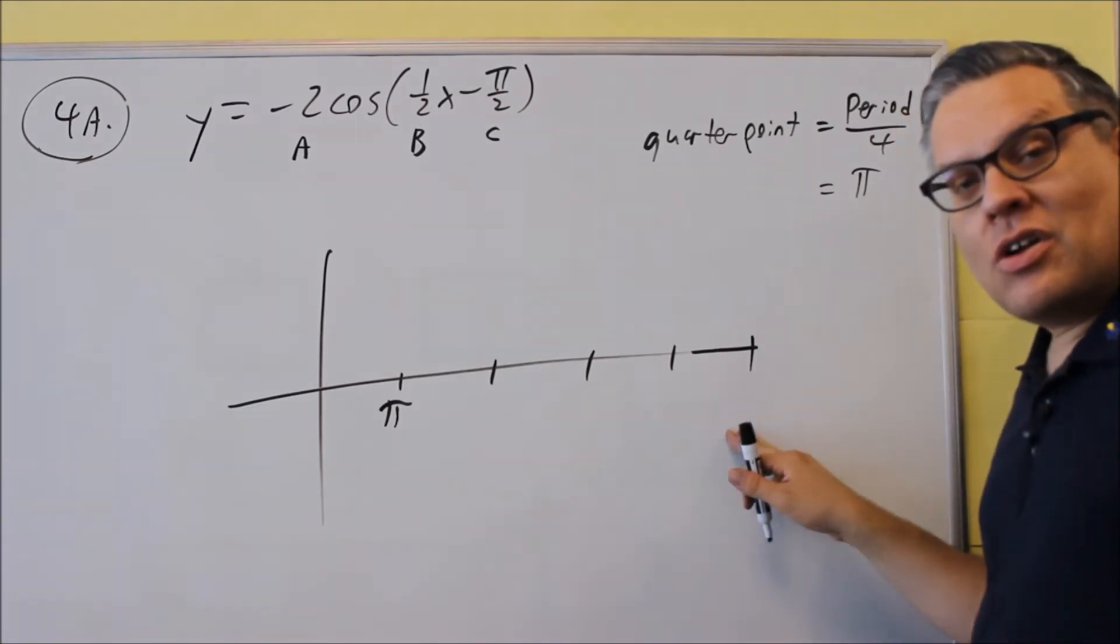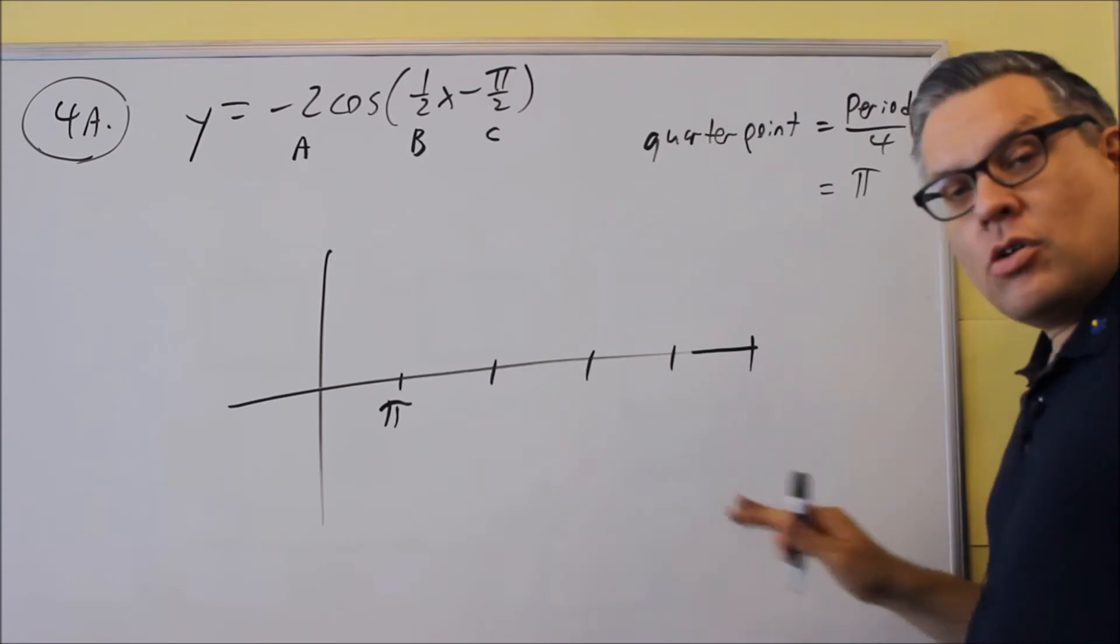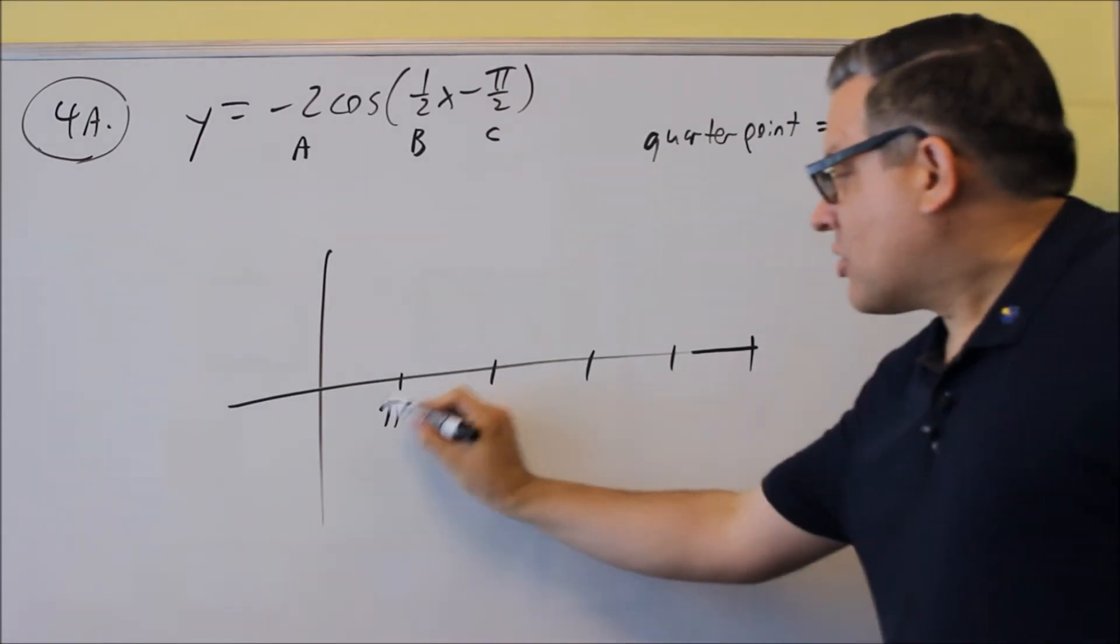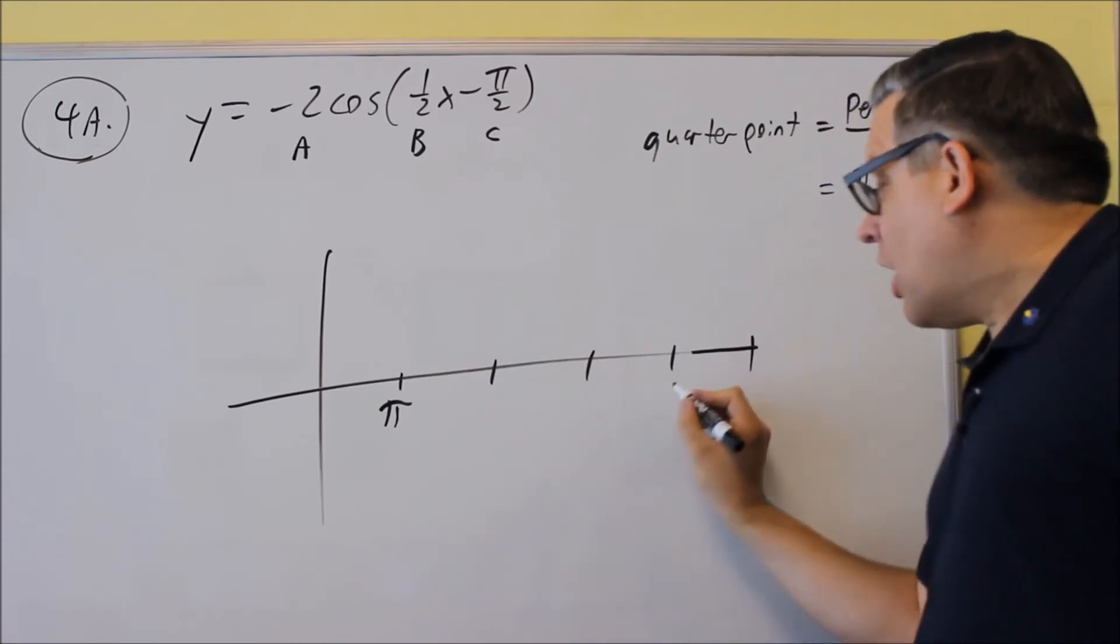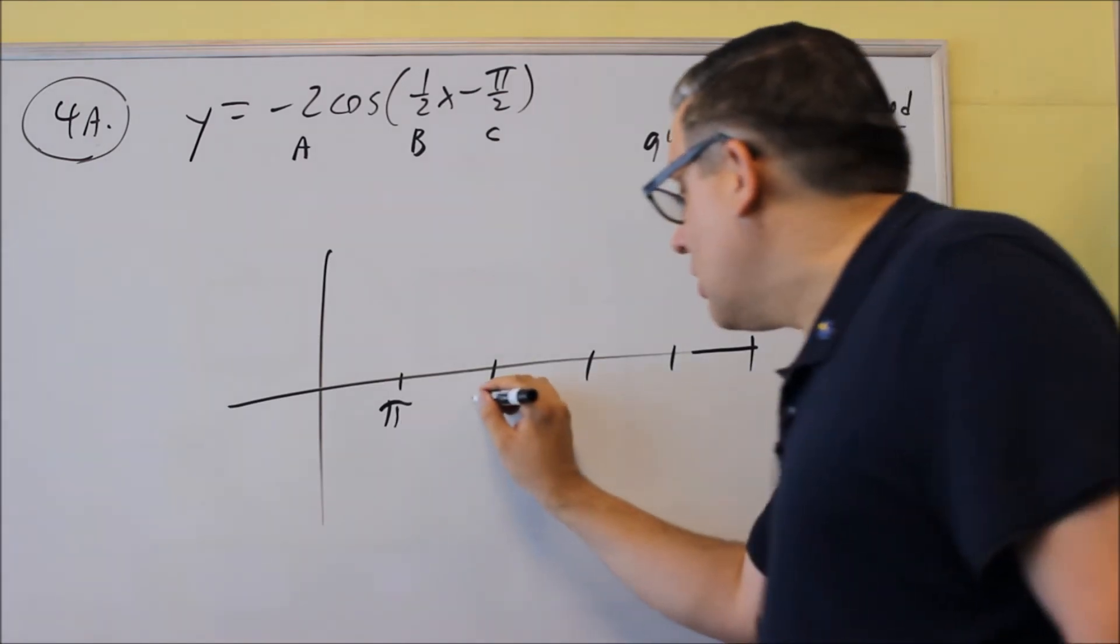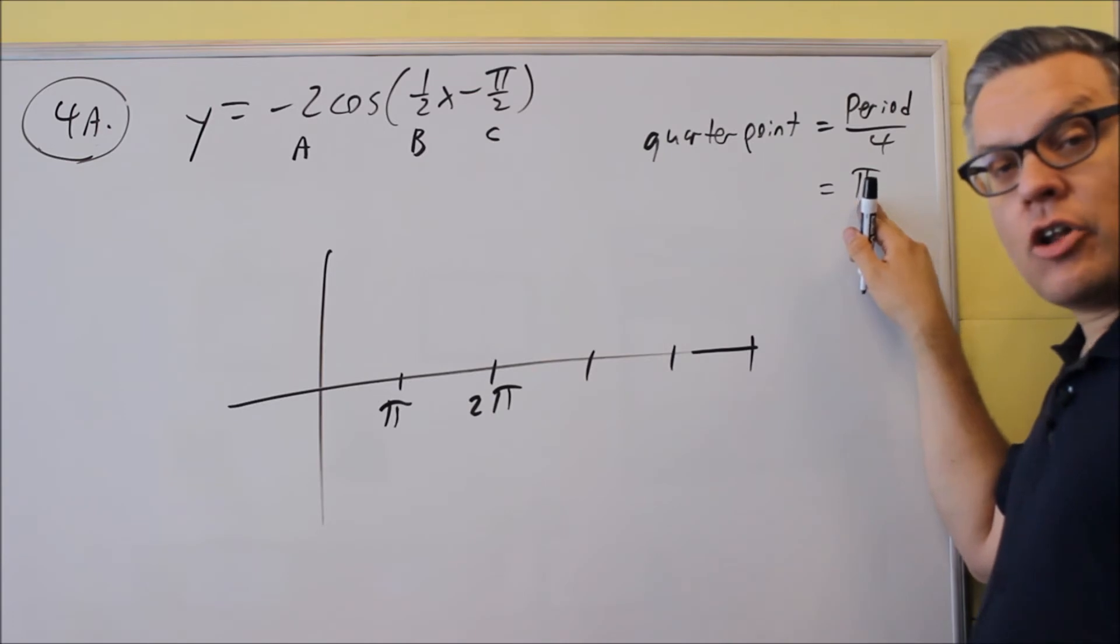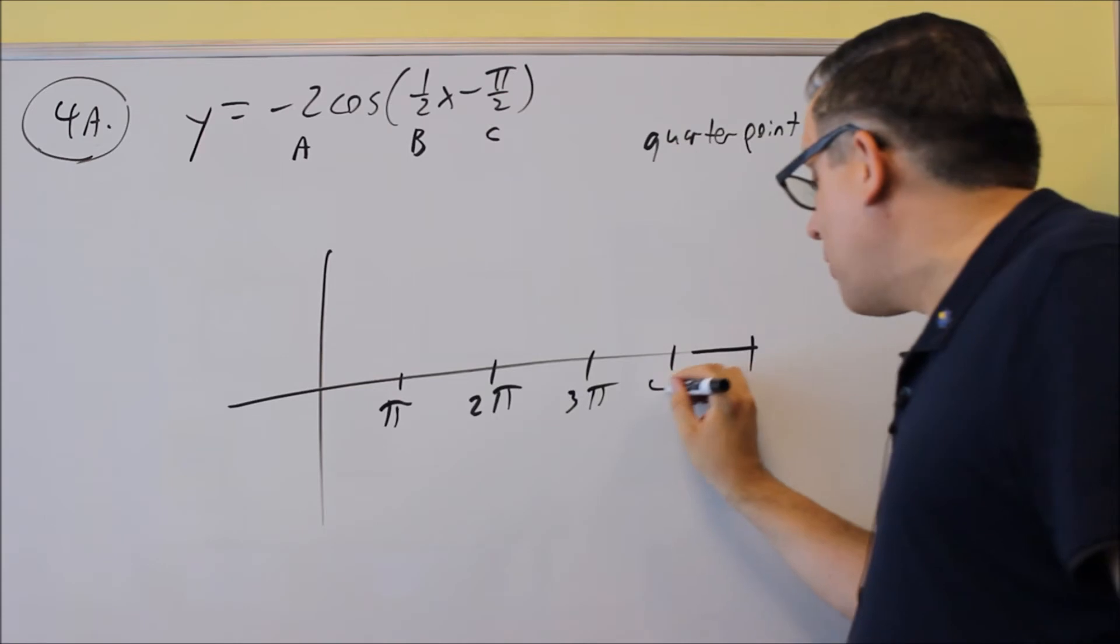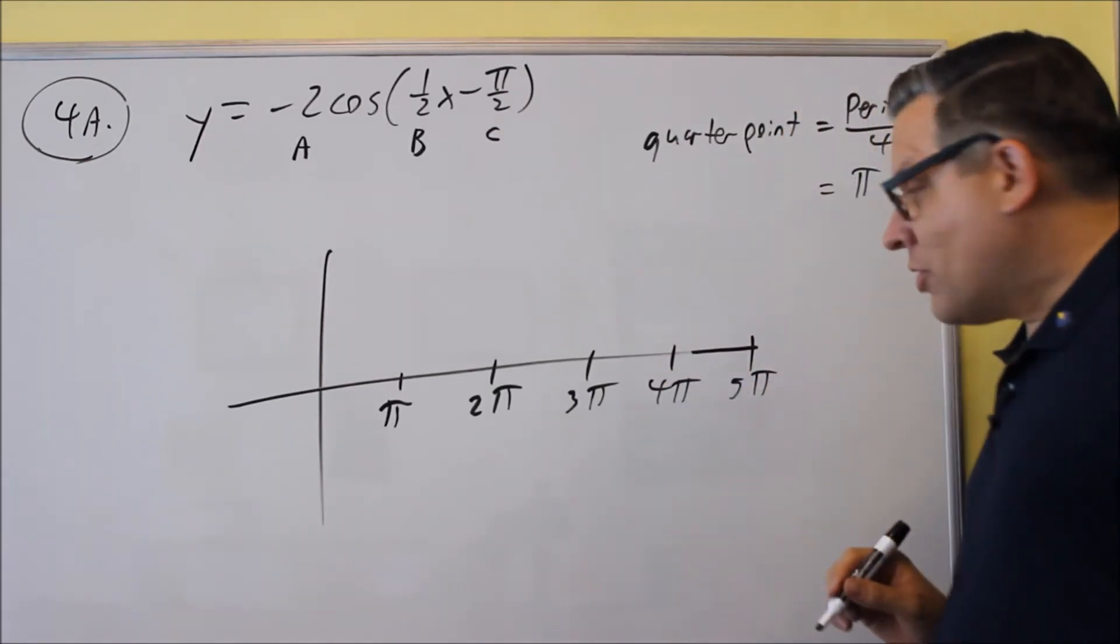You've got to find the rest of these. To get full credit for this problem, you want to make sure that you label all of your other key points. Now, what we do is we just take the starting point, and we just keep adding the quarter point all the way across until we finish this. So if I take π and I add π to it, I'll get 2π. If I take 2π and add another π, I'll get 3π. Add π to that, I get 4π. Add π to that, and I get 5π.